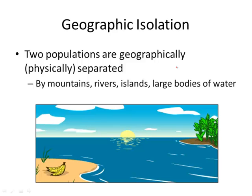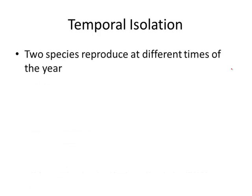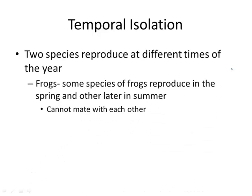Geographic isolation is when two populations are physically separated — for example, by mountains, rivers, islands, or large bodies of water. If separated, they physically can't mate and they'll change over time. Temporal isolation — think T for temporal, T for time — is when two species reproduce at different times of year. For example, some frog species reproduce in spring and others in summer, so they cannot mate. Different flowers may also open at different times of day to receive pollen.